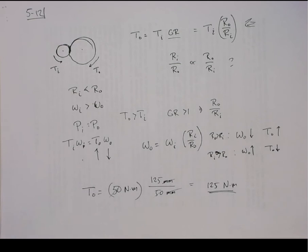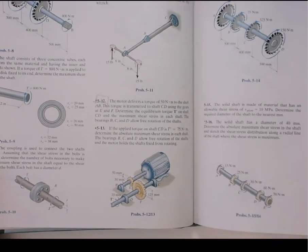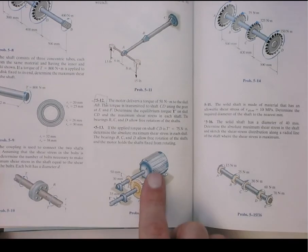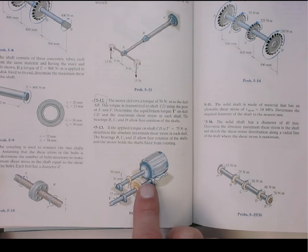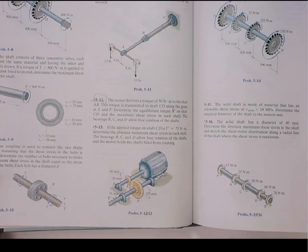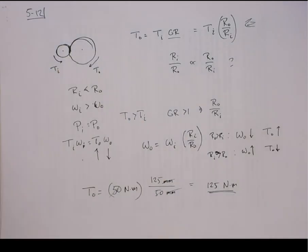So if you remember, the problem in 5.12 is that of a motor driving a shaft. That shaft has a small pinion that then mates with a larger gear that drives the output shaft. So let's talk a little bit about gears.